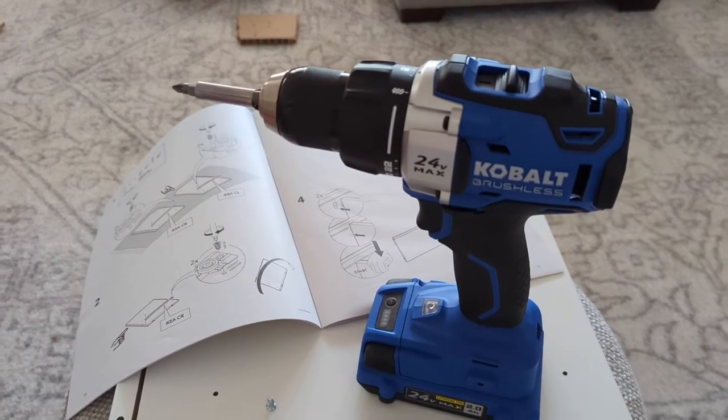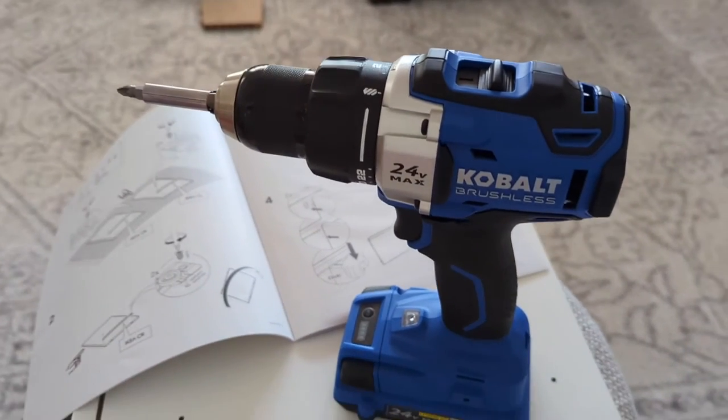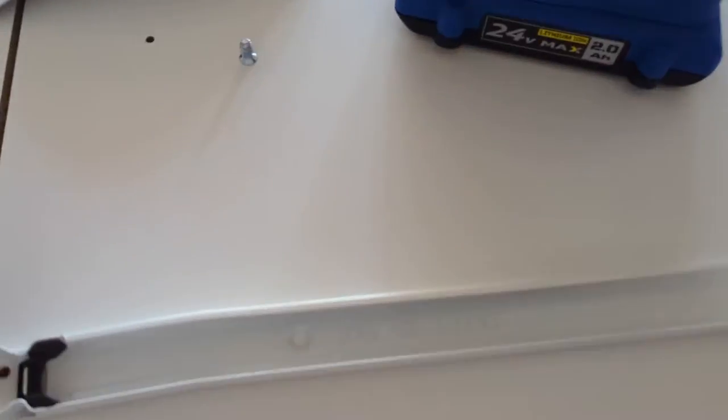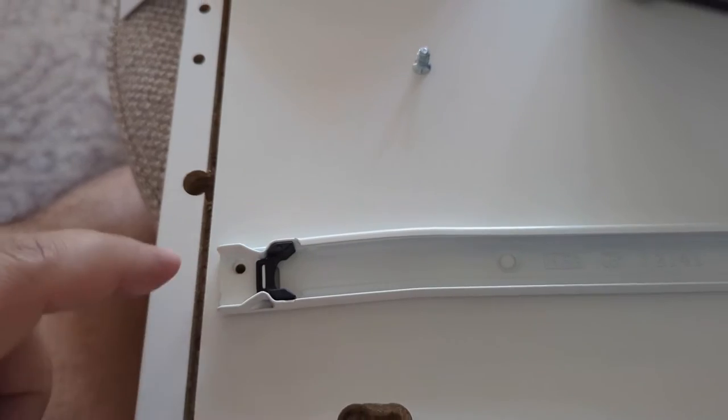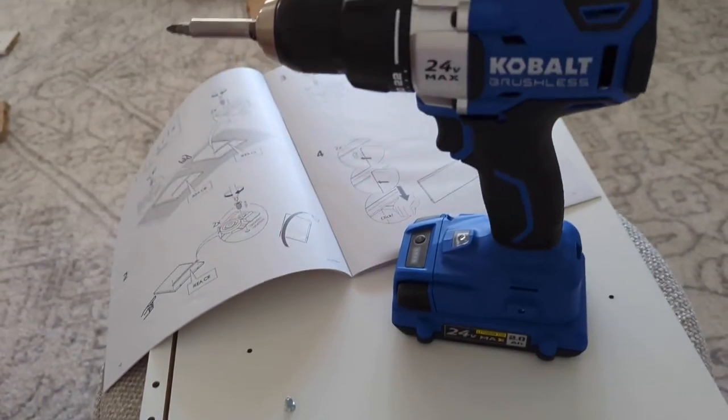Normally it isn't recommended that you use power tools to build IKEA furniture simply because the power tool is usually too strong. What happens is if you use a drill to put in a little screw, it sometimes goes too far and digs into the wood. This video is to show you a simple way to set up your power tools so that it's safe to use with IKEA furniture.